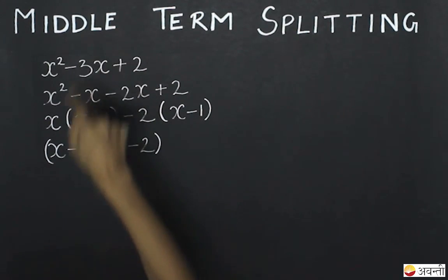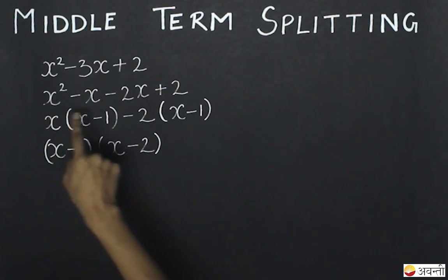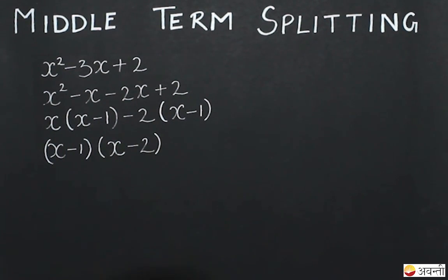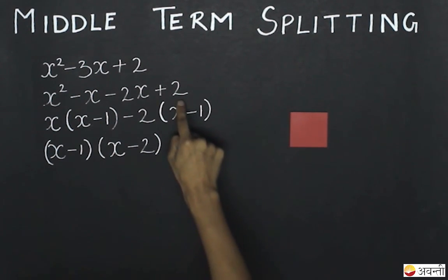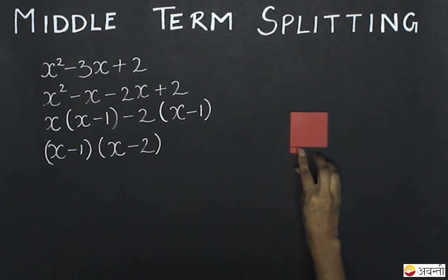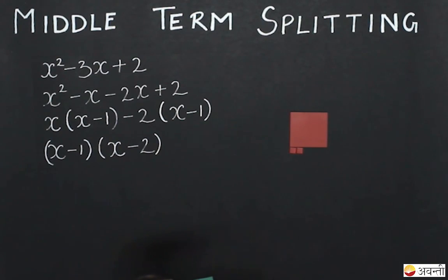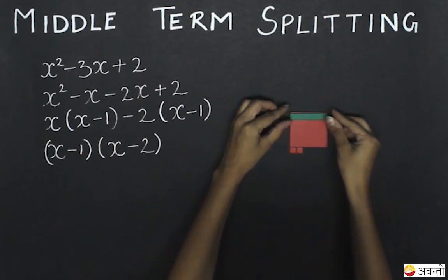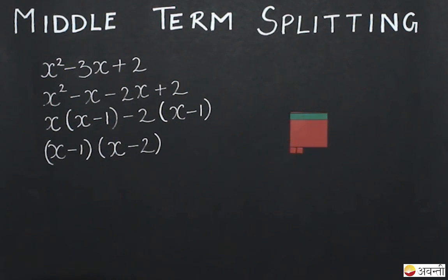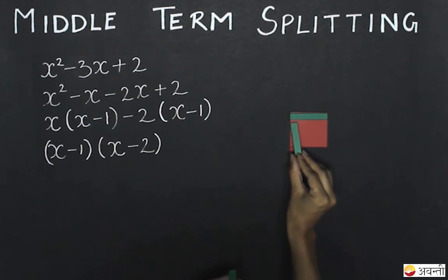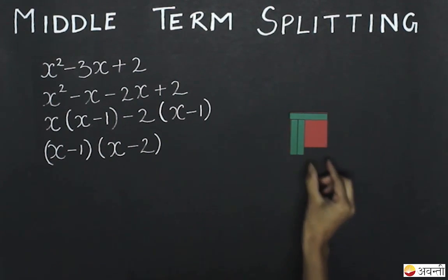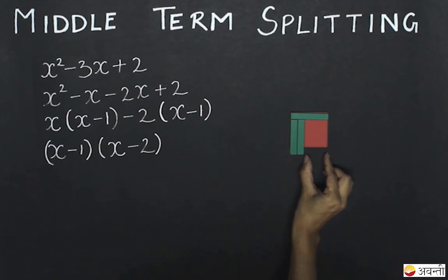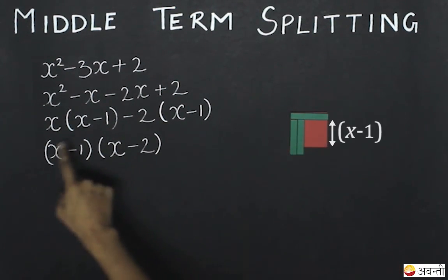In this expression also, I have one negative term. After middle term splitting, I get x squared minus x minus 2x plus 2. I will first represent the positive terms: for x squared I use one square, and for these two units I use two unit squares. I have two negative terms: minus x and minus 2x. For minus x, I use one strip with its green side along one side of the square. For minus 2x, I use two strips with their green sides placed so they cover the two unit squares. The remaining red area is x minus 2 into x minus 1, which is our expression.